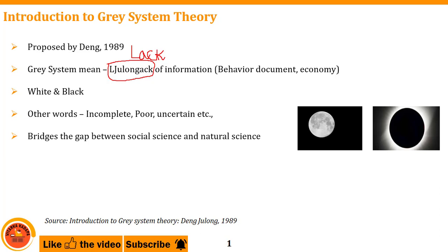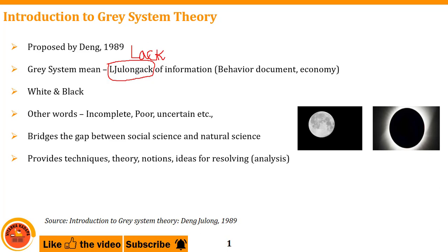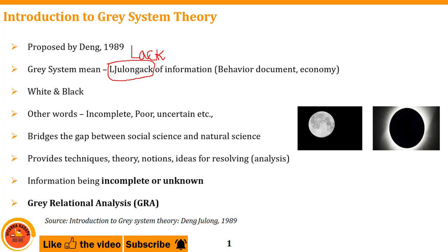This gray system is going to bridge the gap between social sciences and natural sciences. In the category of social sciences there will be economy systems, geographical systems, and natural systems. In between these two fields of science there is a gap, and this theory provides various kinds of techniques, notions, and ideas for resolving uncertainty — incomplete information or unknown information. That is the major concept behind gray system, and it is shortly termed as GRA, gray relation analysis.